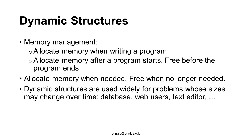The second method decides the amount of memory needed after a program starts. For example, a program needs to read a file and store the data in the file. The program may open the file, read the entire file, decide the amount of data in the file, allocate the memory, and then read the file again. Before the program ends, the program frees the memory.